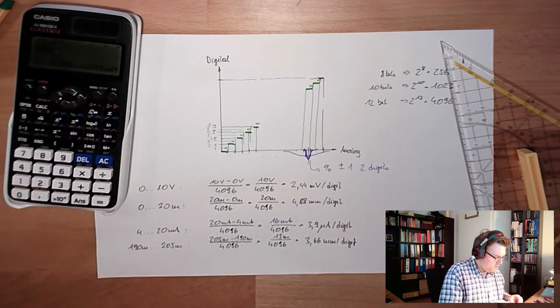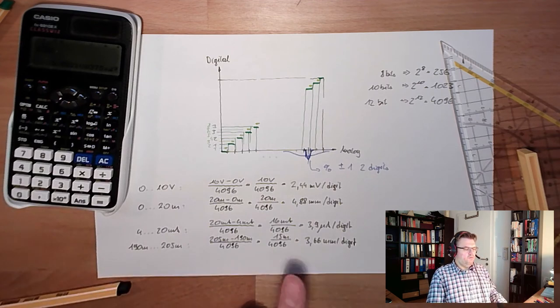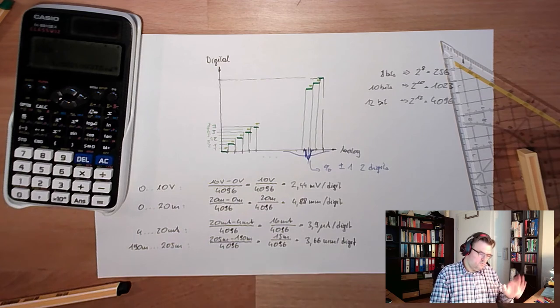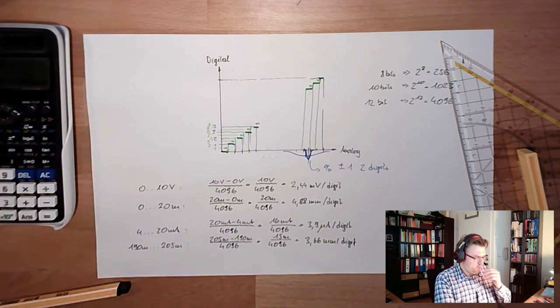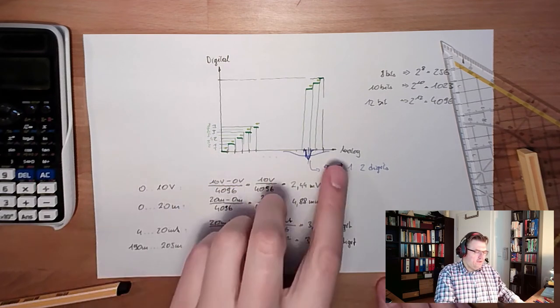So we could measure the level at an accuracy of plus minus one digit, 7.3 millimeters. So that's the resolution, and this is the resolution, how it is dividing this analog range.